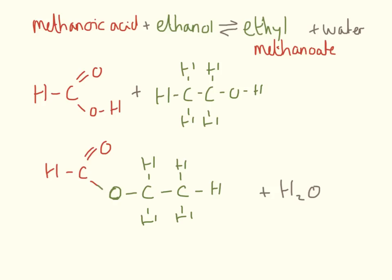This is the other example — ethyl methanoate. It looks very similar to methyl ethanoate, but because of the naming we can tell which bit came from where. We have methanoic acid with its one carbon and carboxylic acid functional group, and ethanol with its two carbons and alcohol functional group. In the ester, this part came from the carboxylic acid and this part came from the alcohol. It doesn't matter which way round you draw it — the important thing is that you can identify the ester functional group in the middle.